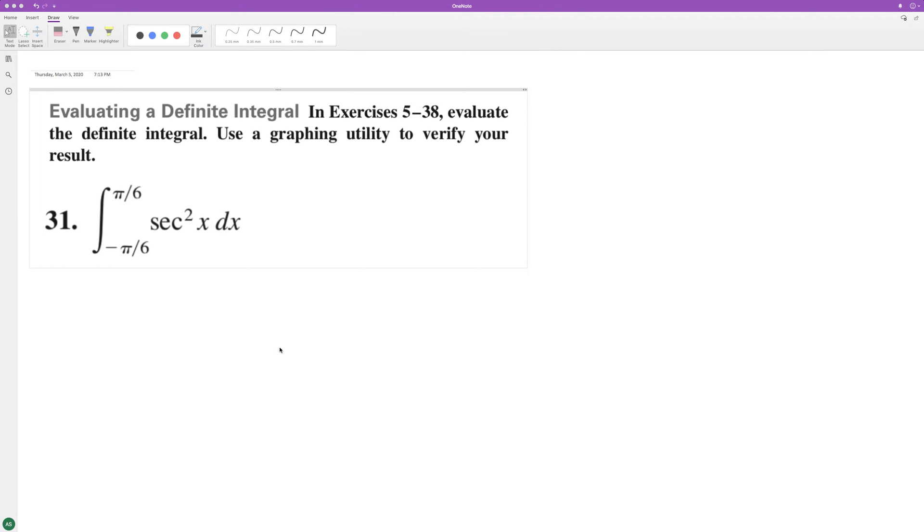Integrate the following: the integral of secant squared x is equal to the tangent of x, and we're going from negative pi over six to pi over six. So pi over six is over here on the unit circle and over here.